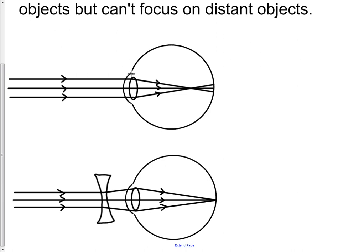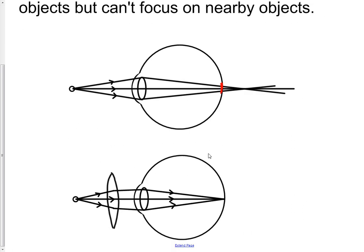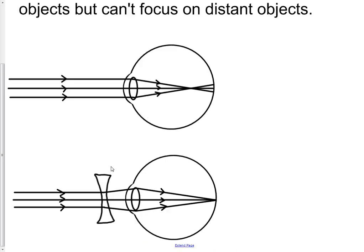So there are four diagrams here — all different — and you need to be able to reproduce each one and understand what is going on. There are various causes for long sight and short sight which you can read about in your textbook. The key thing to know is: a converging lens converges the rays slightly before they hit the eye, and a diverging lens diverges the rays slightly before they hit the eye. If you can get all those features into your diagram, you're absolutely going to have it spot on.